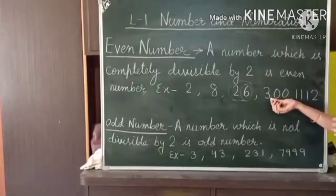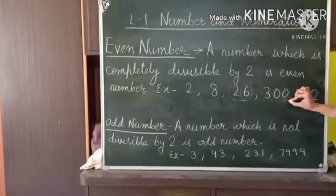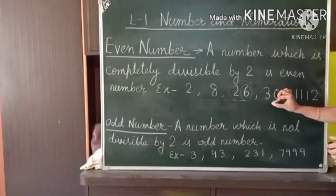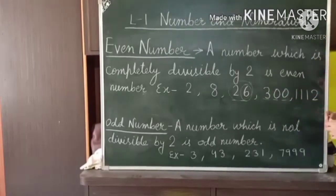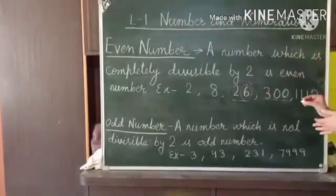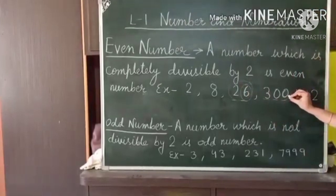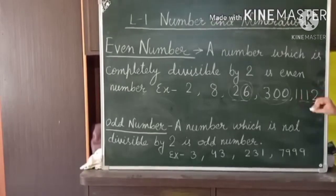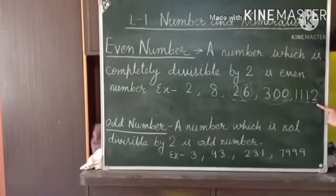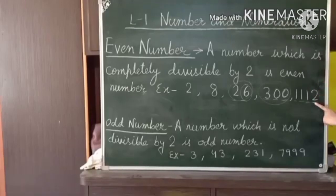Now I have written here a 3-digit number: 300. The digits are at ones, tens, and hundreds positions. Here we look at the digit at the ones position — that is 0. Since 0 is also an even number, the whole number 300 is even. Now for a 4-digit number: the positions are ones, tens, hundreds, and thousands. We look at the digit at the ones position — that is 2. We can find 2 in the table of 2, so if this digit is even, then the whole number is even.